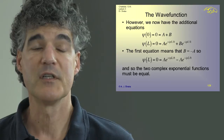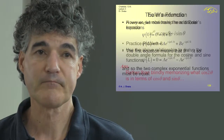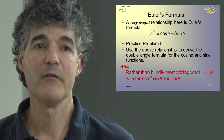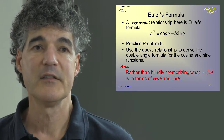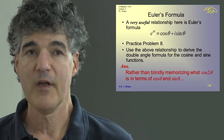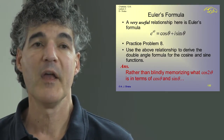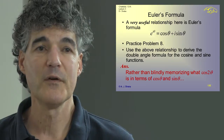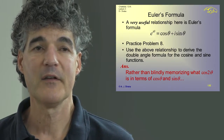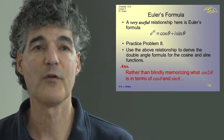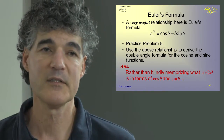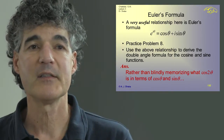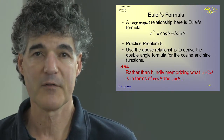A very useful relationship here is Euler's formula: e^(iθ) equals cosine θ plus i sine θ. If you haven't had a course in complex analysis, you may not have encountered this, but it is by far one of the most useful relations you can ever imagine. We can use this formula to derive all kinds of other formulas that some people try to commit to memory.